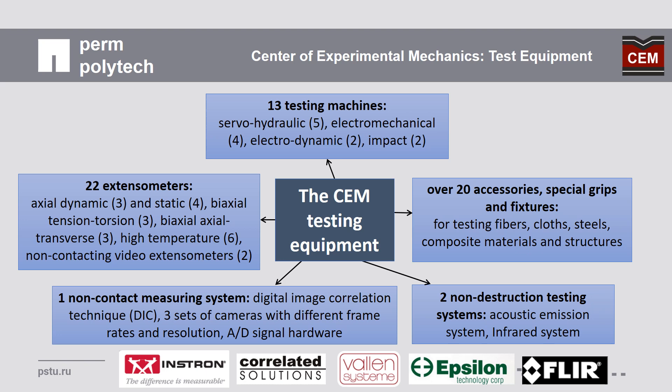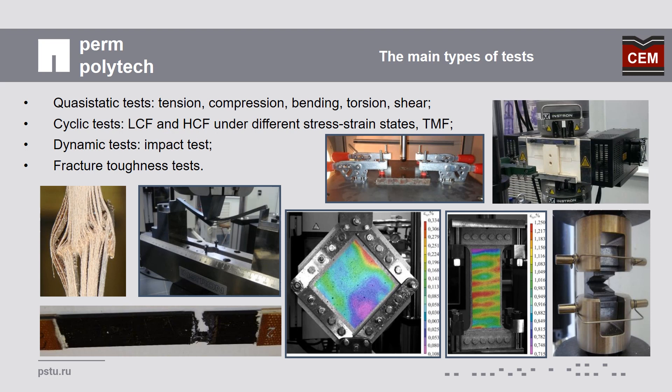The Center of Experimental Mechanics is equipped with different types of testing machines — for example, servo-hydraulic, electromechanical, electrodynamic, and impact systems. We have a large set of different types of extensometers, specialized grips and fixtures for different materials and structures, a digital image correlation system with cameras of different frame rates and resolutions, and two non-destructive testing systems: acoustic emission and infrared.